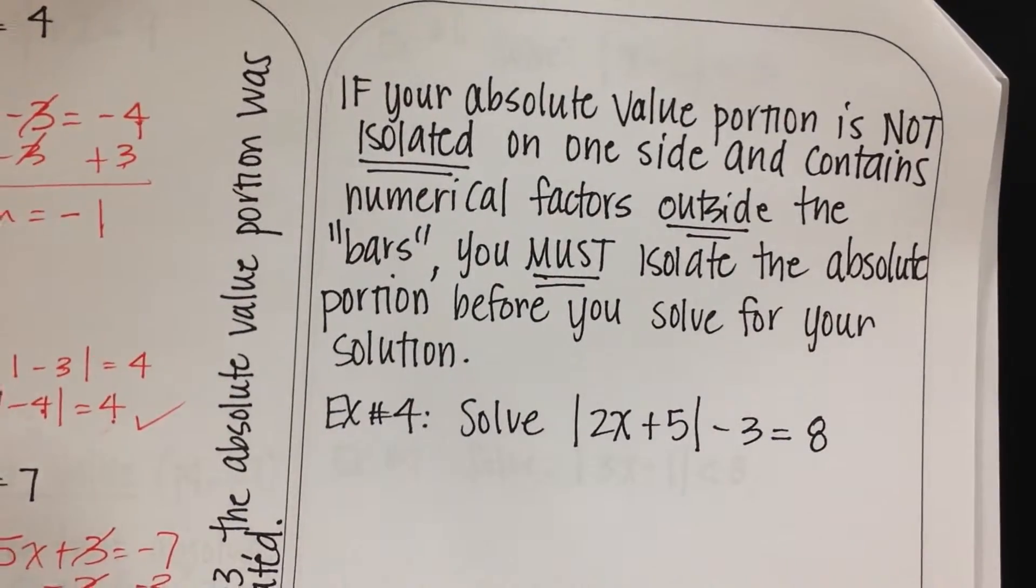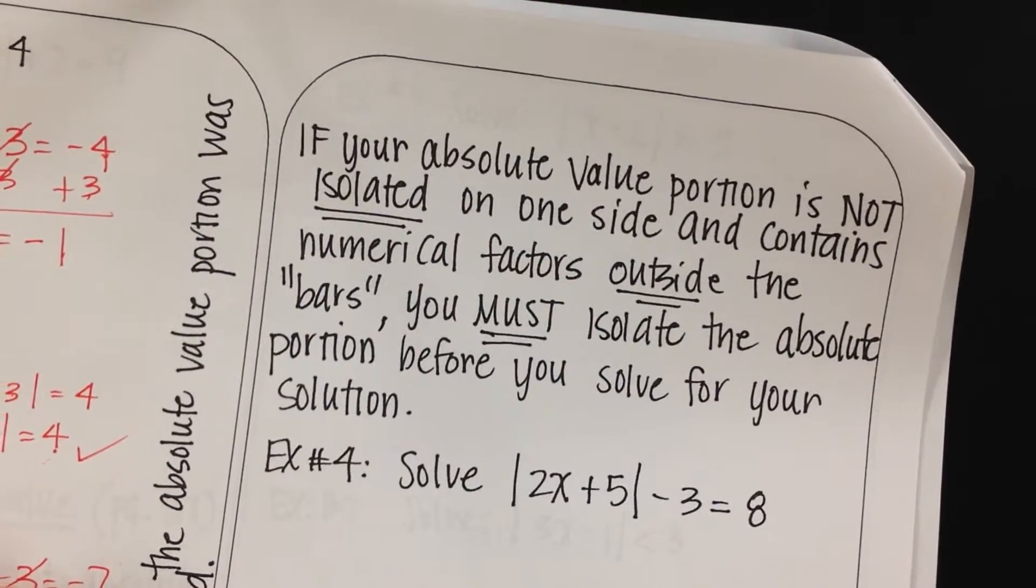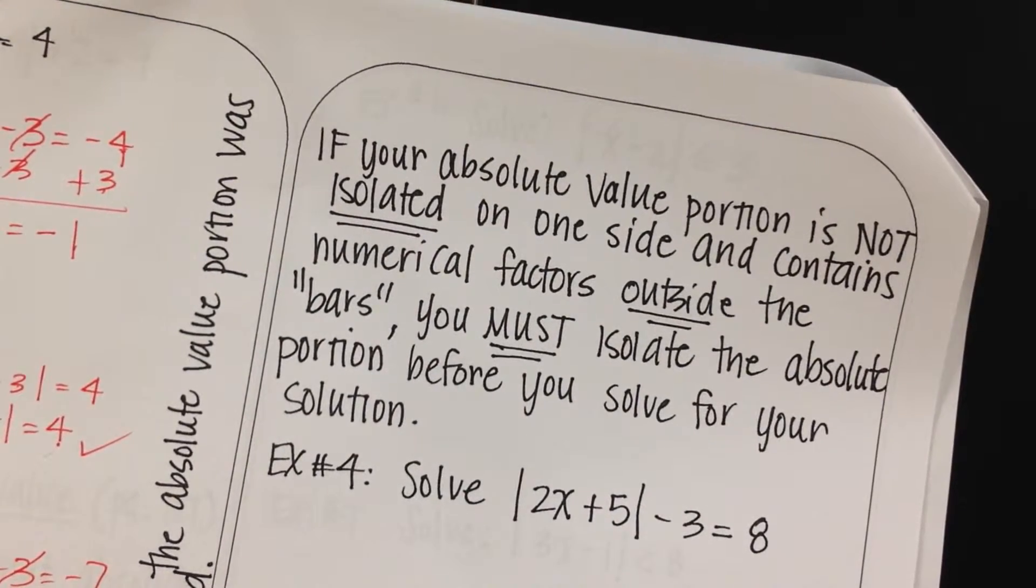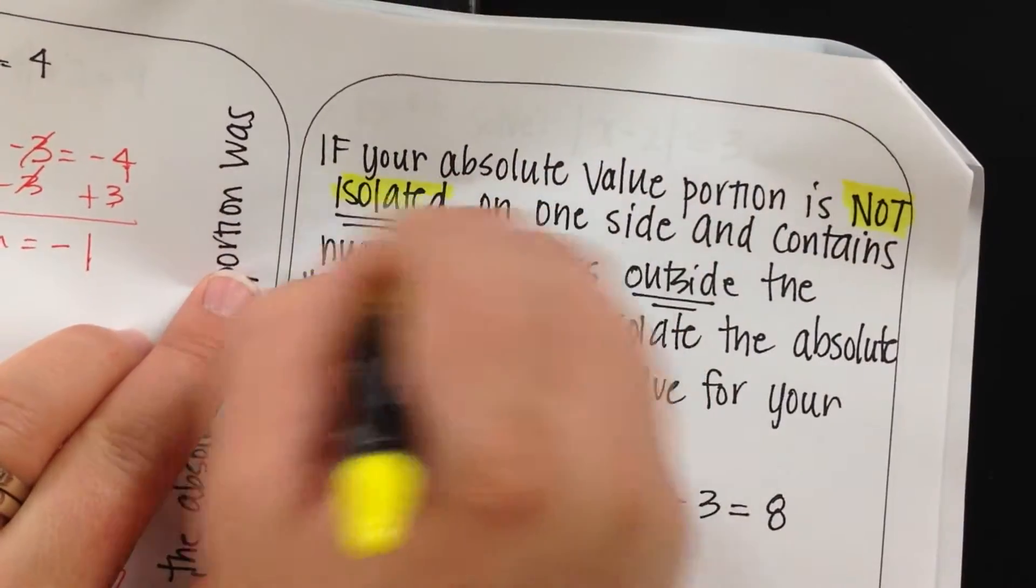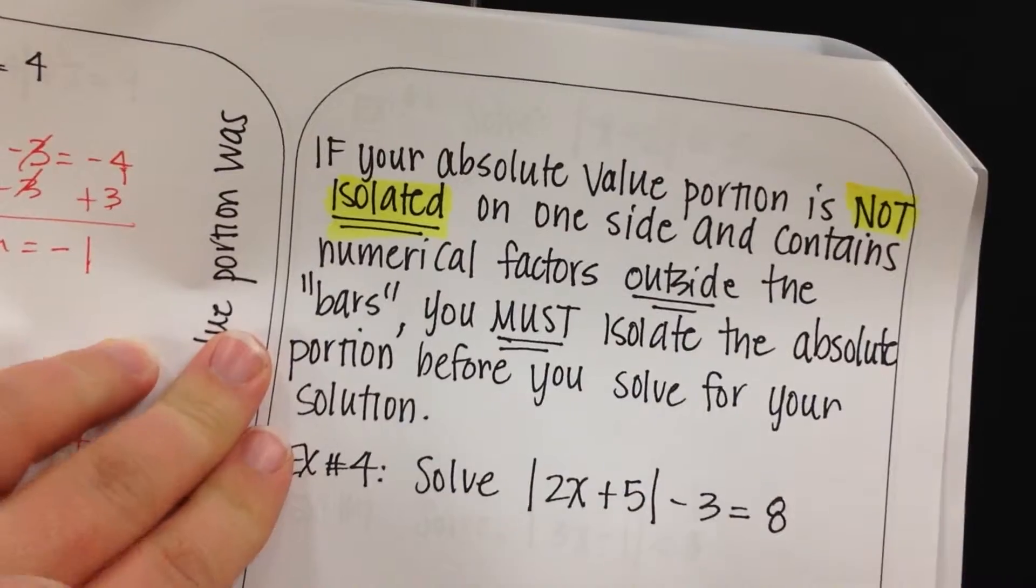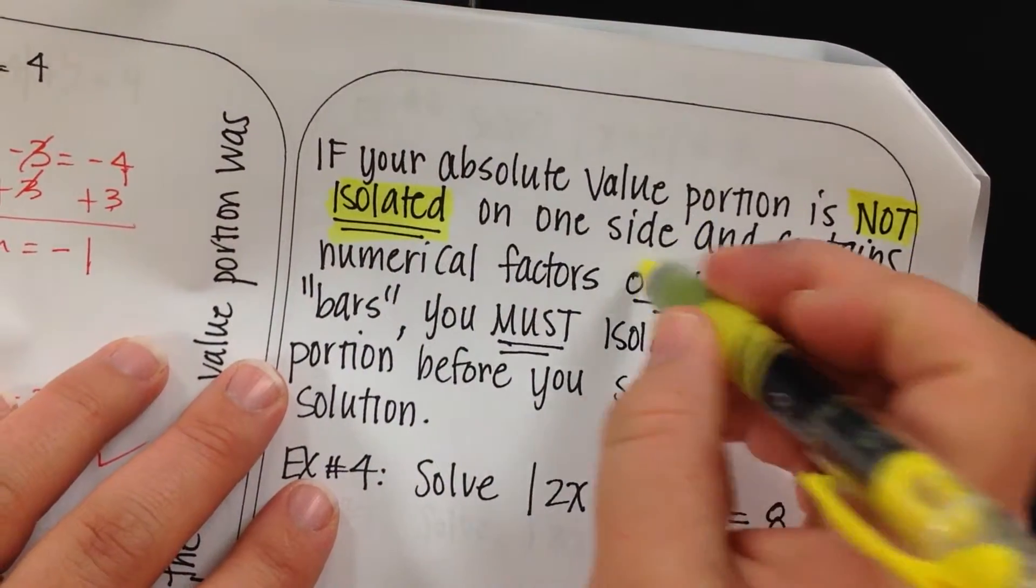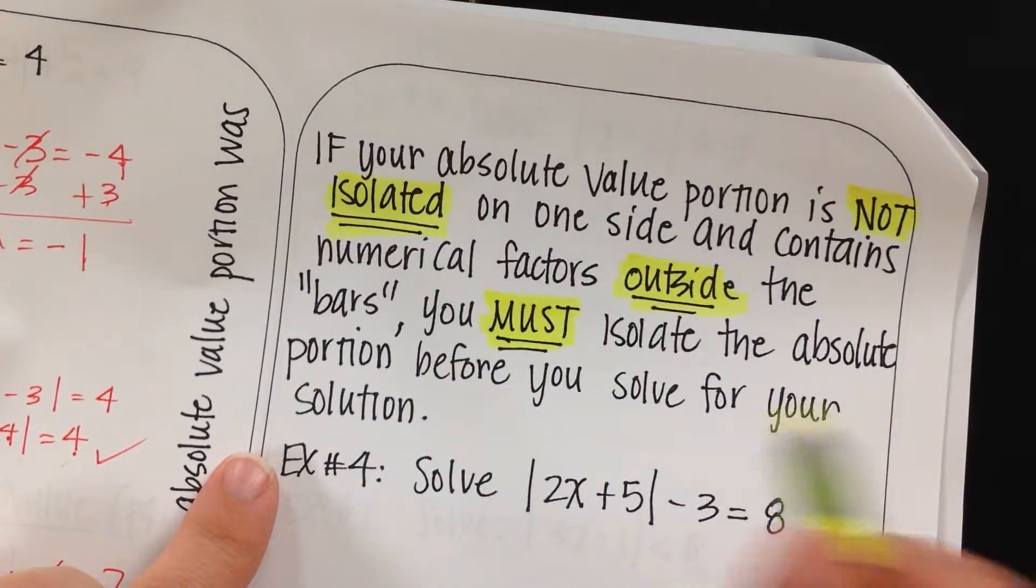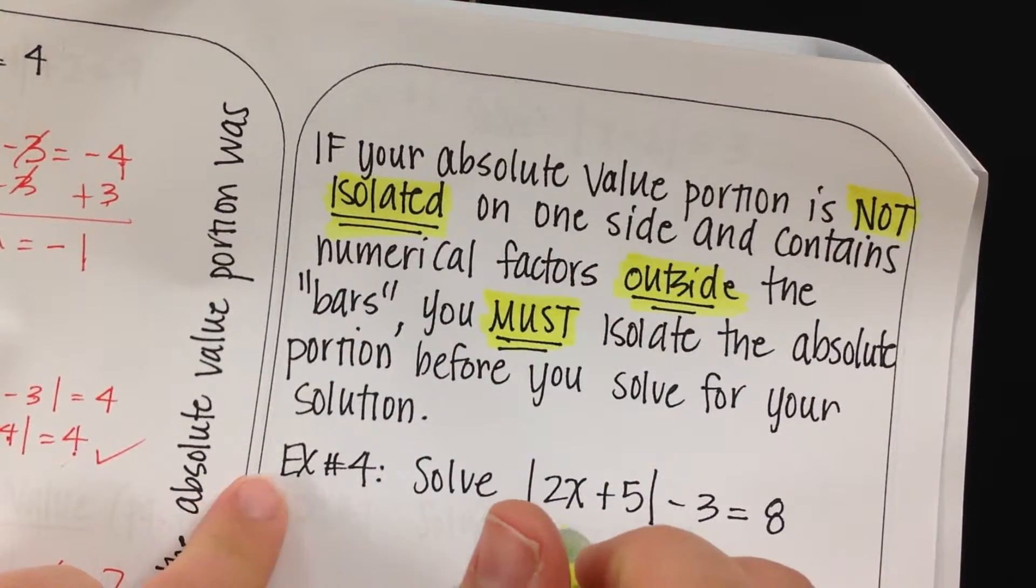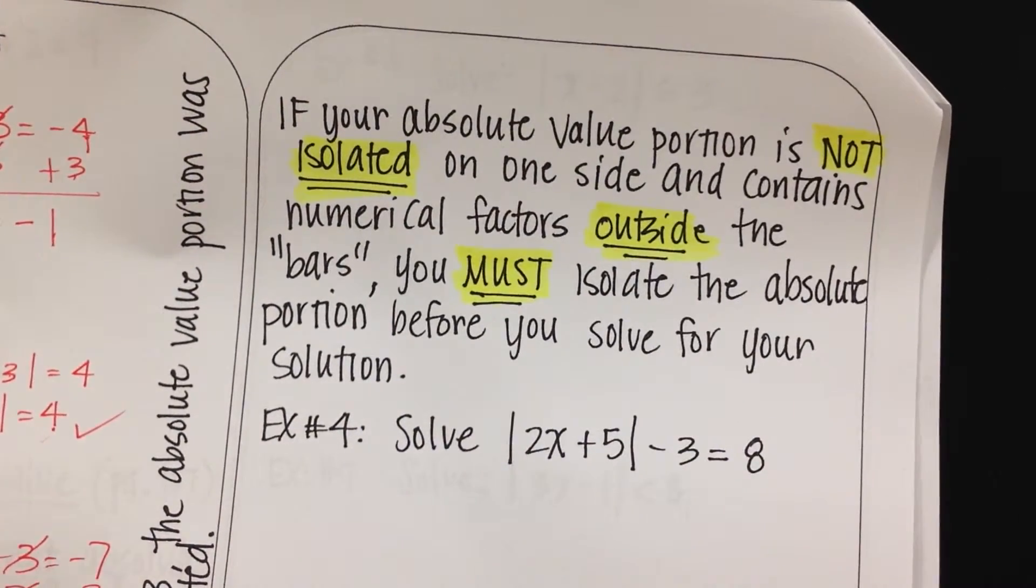Looking over at example 4, I made a little note for you guys. If your absolute value portion is not isolated, if that's not the only thing on one side and it contains a numerical factor outside of the bars, you must isolate the absolute portion first before you separate and create your two equations.